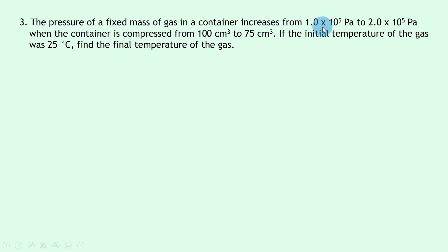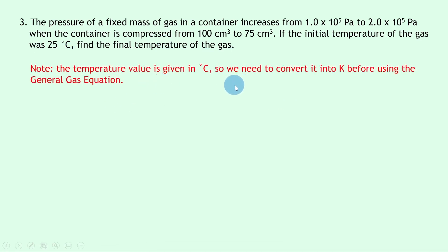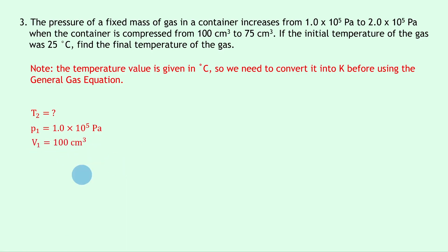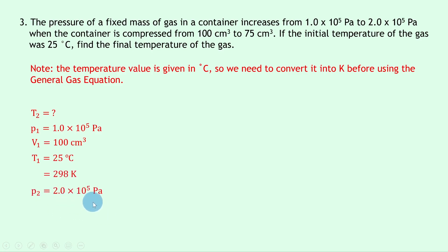Question 3 says that the pressure of a fixed mass of gas in a container increases from 1.0 × 10⁵ pascals to 2.0 × 10⁵ pascals when the container is compressed from 100 cm³ to 75 cm³. If the initial temperature was 25 degrees Celsius, find the final temperature. Just like in question 1, we need to convert to Kelvin. We're finding t2; p1 = 1.0 × 10⁵ Pa, v1 = 100 cm³, t1 = 25°C = 298 K, p2 = 2.0 × 10⁵ Pa, and v2 = 75 cm³.